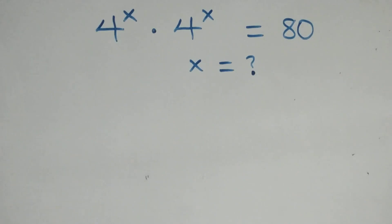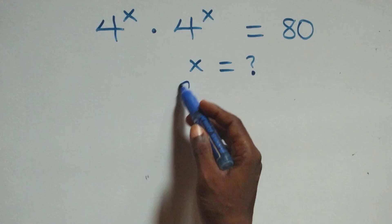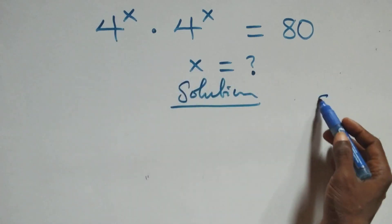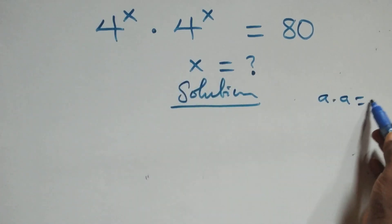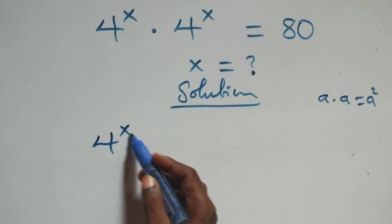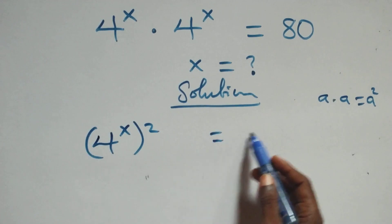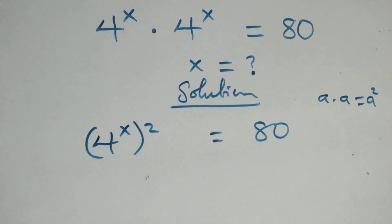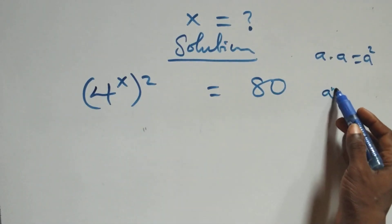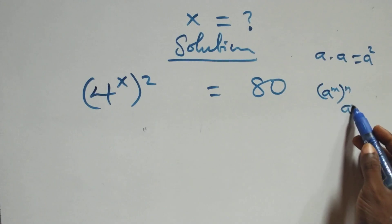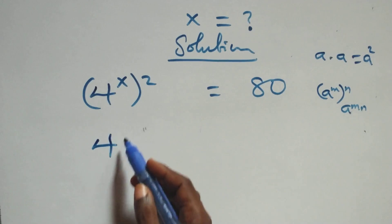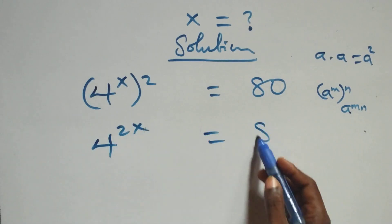Hello, you are welcome. How to solve this nice exponential equation. What we have here: when we have a times a, which can be written as a squared. By the same thing multiplying, we have 4 raised to power x times 4 raised to power x equals 80. Applying the rule a raised to power m raised to power m equals a raised to power m×m, we get 4 raised to power 2x equals 80.